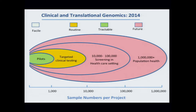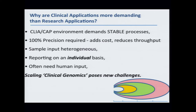We're talking about clinical translation, and there's something of a lag. We're more in the 1,000 to 10,000 sample range right now, ably doing projects with a few hundred samples, and only in a few places getting up into the thousands. Why is this running behind the research arena? It's clearly because there are different demands in the clinical translation space. The CLIA environment demands stable processes with 100 percent precision — research's 99 percent doesn't cut it. That adds cost, reduces throughput, and requires dealing with heterogeneous samples, with patients coming in one at a time and individual reporting required at all steps.